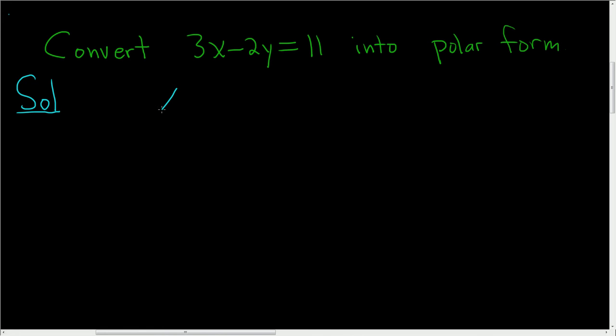We'll need two formulas for this problem. The first tells us that x is equal to r cosine theta, and the other is a formula for y. y is equal to r sine theta.